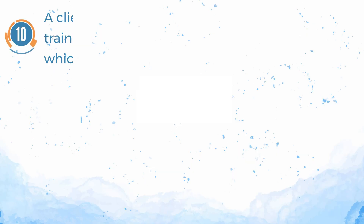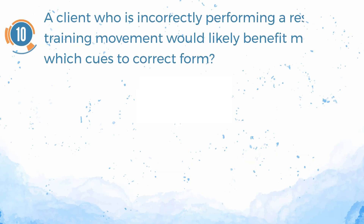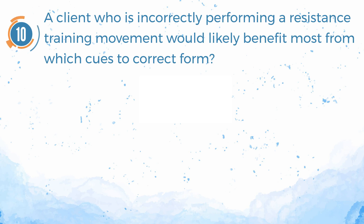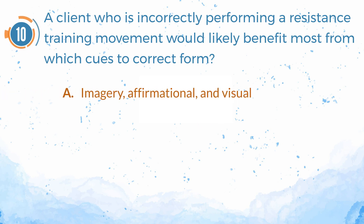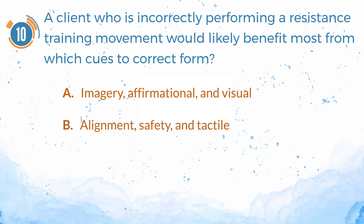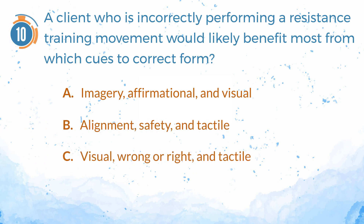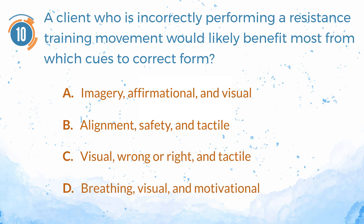Number 10. A client who is incorrectly performing a resistance training movement would likely benefit most from which cues to correct form? A. Imagery, affirmational, and visual. B. Alignment, safety, and tactile. C. Visual, wrong-or-right, and tactile. D. Breathing, visual, and motivational.